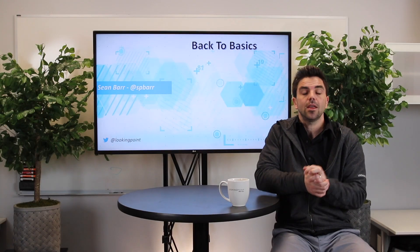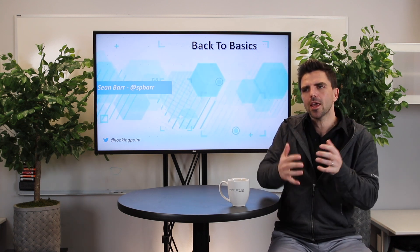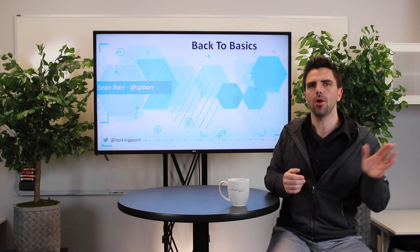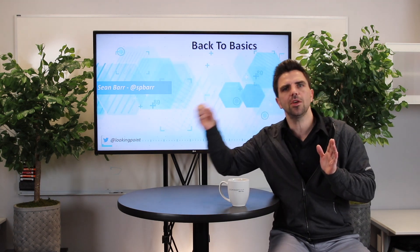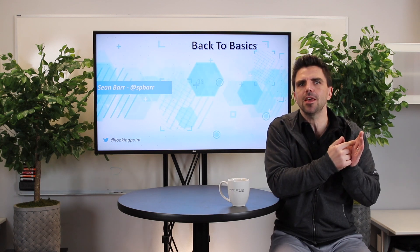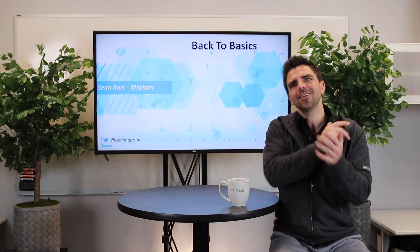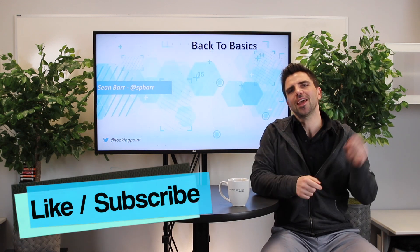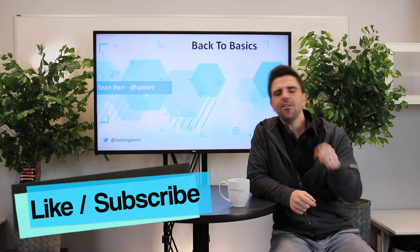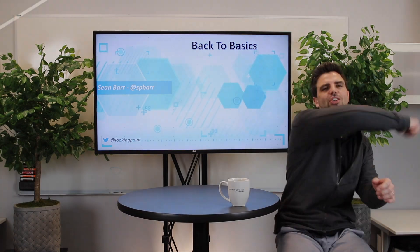Echo cancellation — that's it. It cancels out the echo. It happens at the far end, but it's for the person speaking at the remote end. They're talking, it's playing out the speakers, the microphone on the table picks it up, plays it back to them, and they hear their own voice. So we need something to deal with that. If I said anything in this video that you want to know more about, leave a comment, like, subscribe, and we will see you on the next Back to the Basics. Thanks for watching.